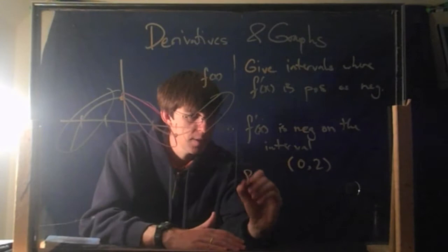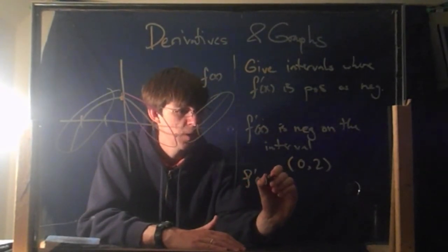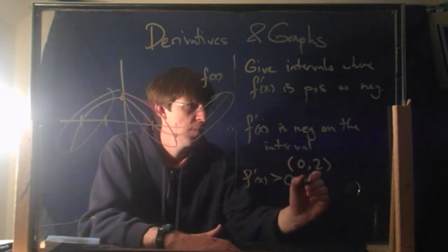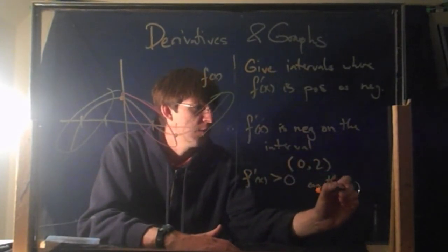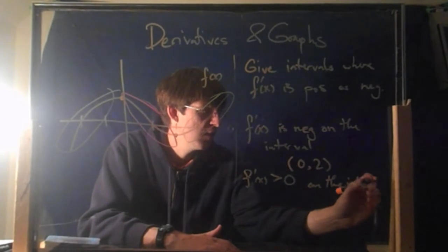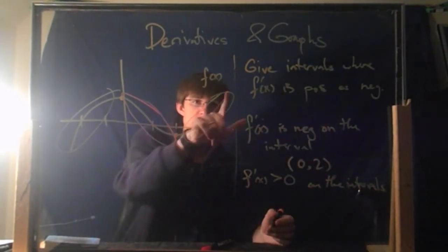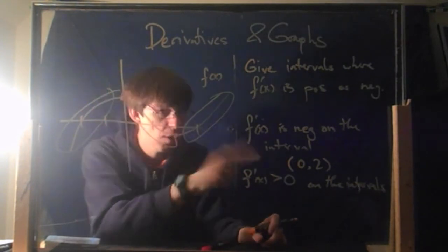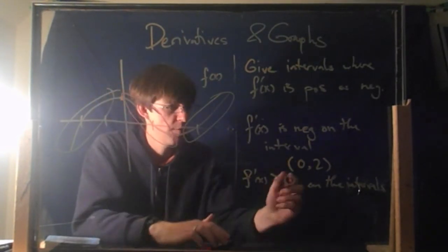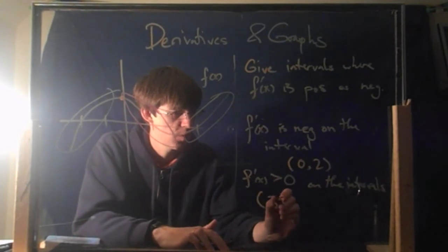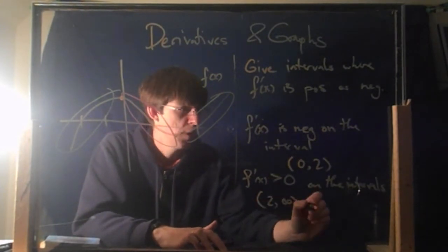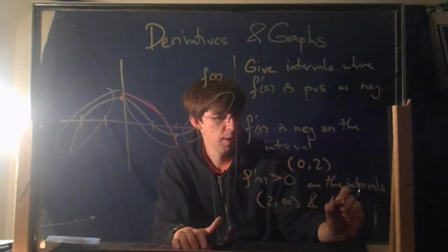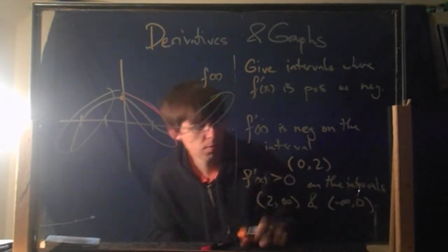What about positive? f prime of x is positive — f prime of x greater than 0, which is the same as saying positive. In this case there are two intervals: this one over here and this one back here. This one for the x values would be from 2 all the way out, everything greater than 2. The way we write that is 2 to infinity. And the other interval is back here, 0 and everything less — that would be minus infinity to 0.